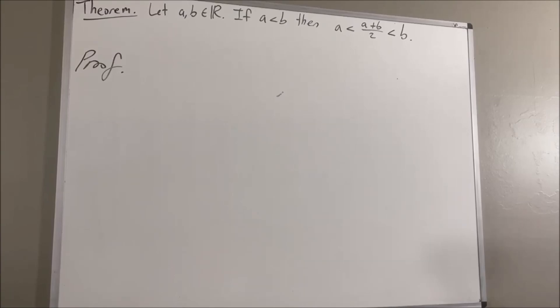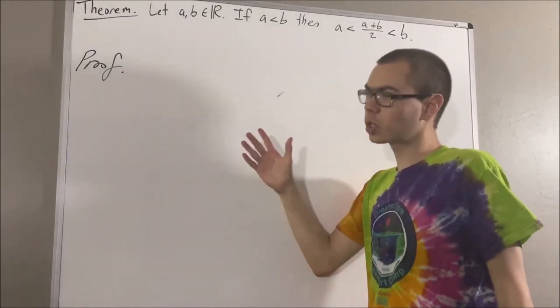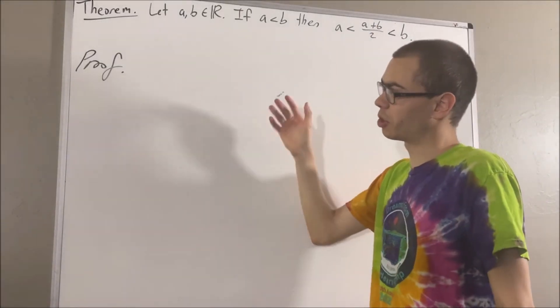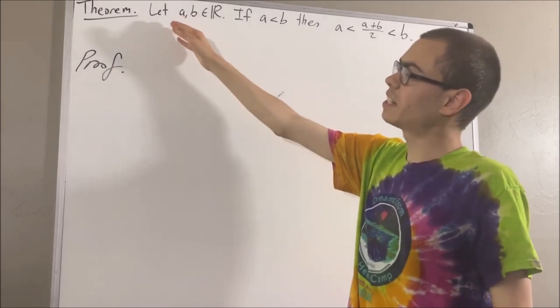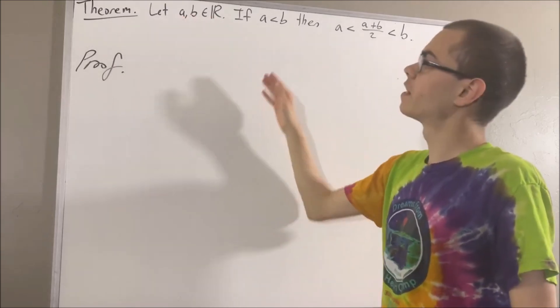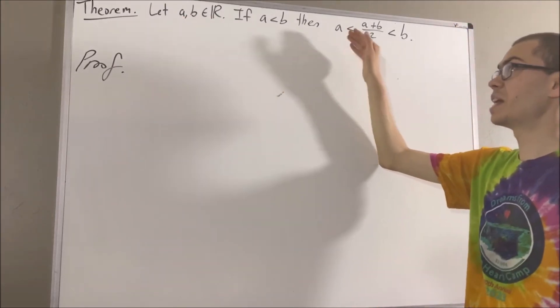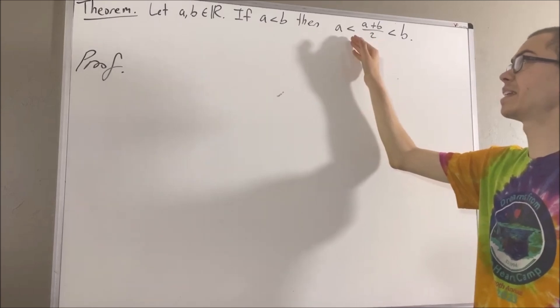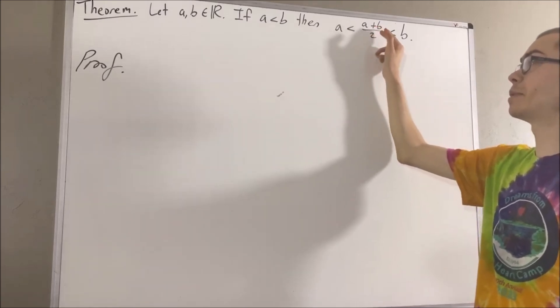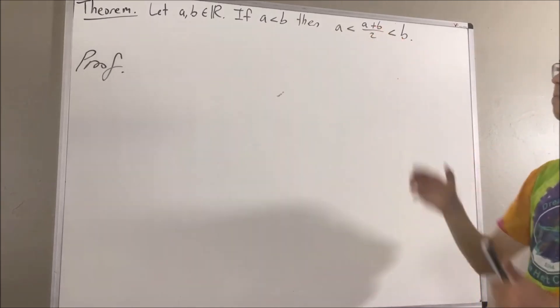Hello! In this video, we are going to prove the following theorem. Let a and b be real numbers. If a is less than b, then a is less than a plus b over 2, which is less than b.